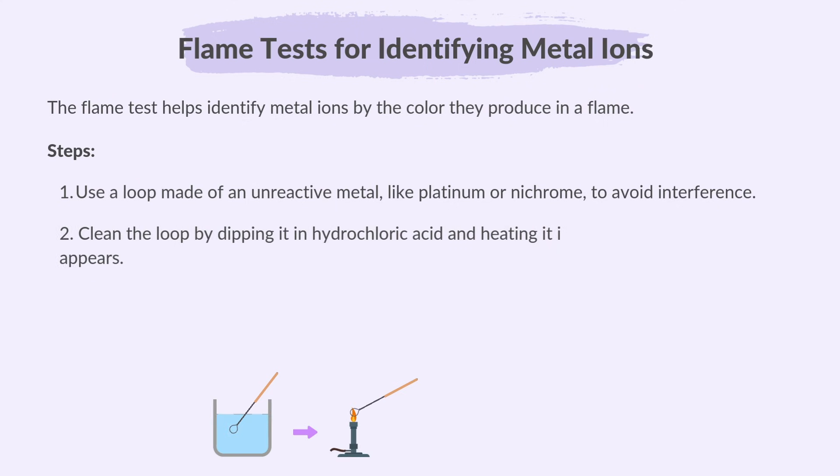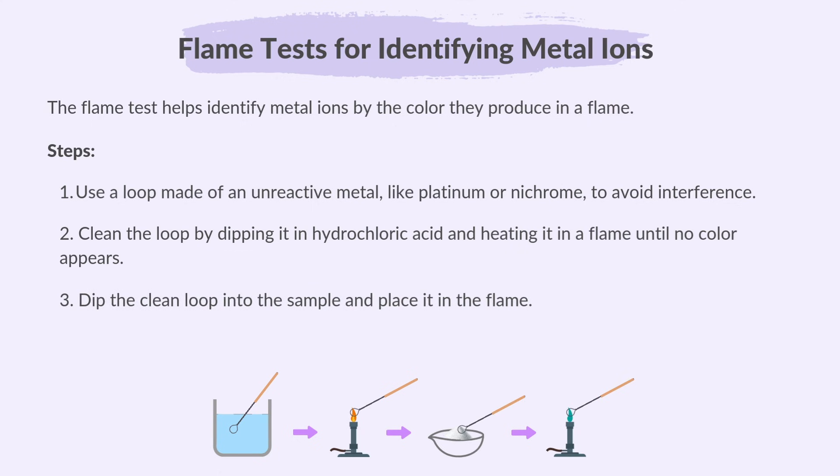Clean the loop by dipping it in hydrochloric acid and heating it in a flame until no colour appears. Then dip the clean loop into the sample, place it in the flame, and observe the flame colour.